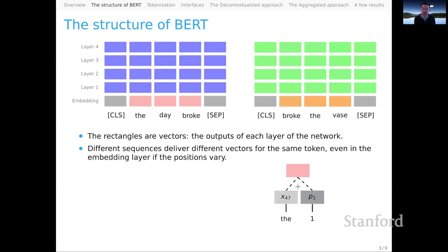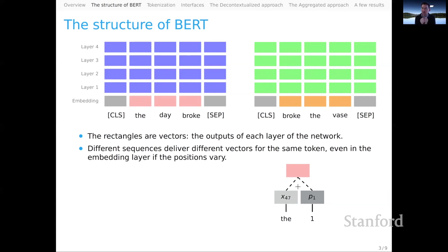Here's the crucial thing that makes BERT contextual. For different sequences that we process, we will get very different representations. Individual tokens occurring in different sequences will get very different representations — I've tried to signal that with the colors here. So two sequences both containing the word 'the' and the word 'broke,' but in virtue of having different surrounding material and different positions in the sequence, almost all of the representations will be different. Even in the embedding layer, if the positions of the words vary, one and the same token will get different representations.